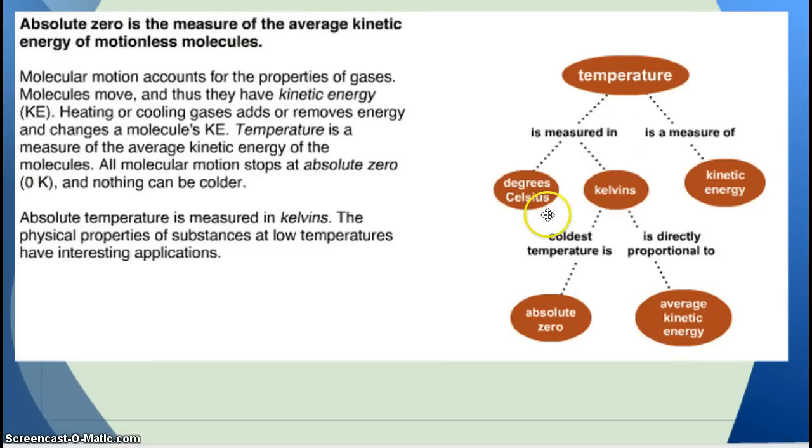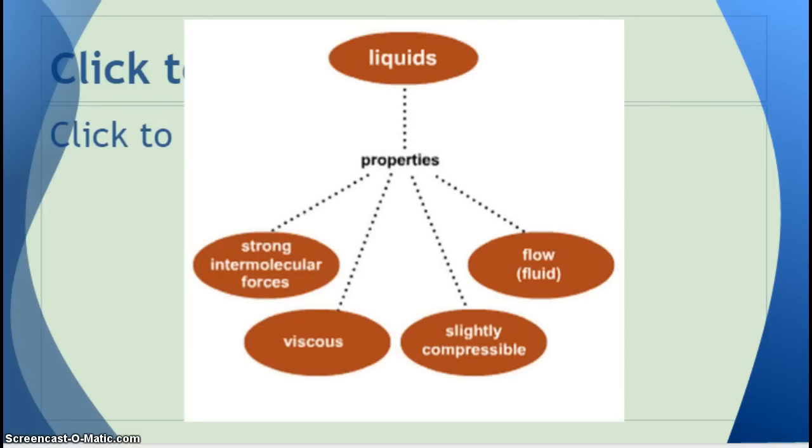So, temperature. We can measure it in degrees Celsius or Fahrenheit, but in science we use Kelvin. The coldest temperature is absolute zero, and it's proportional to kinetic energy. Temperature is just a measure of kinetic energy, which is how fast the molecules or atoms are moving.